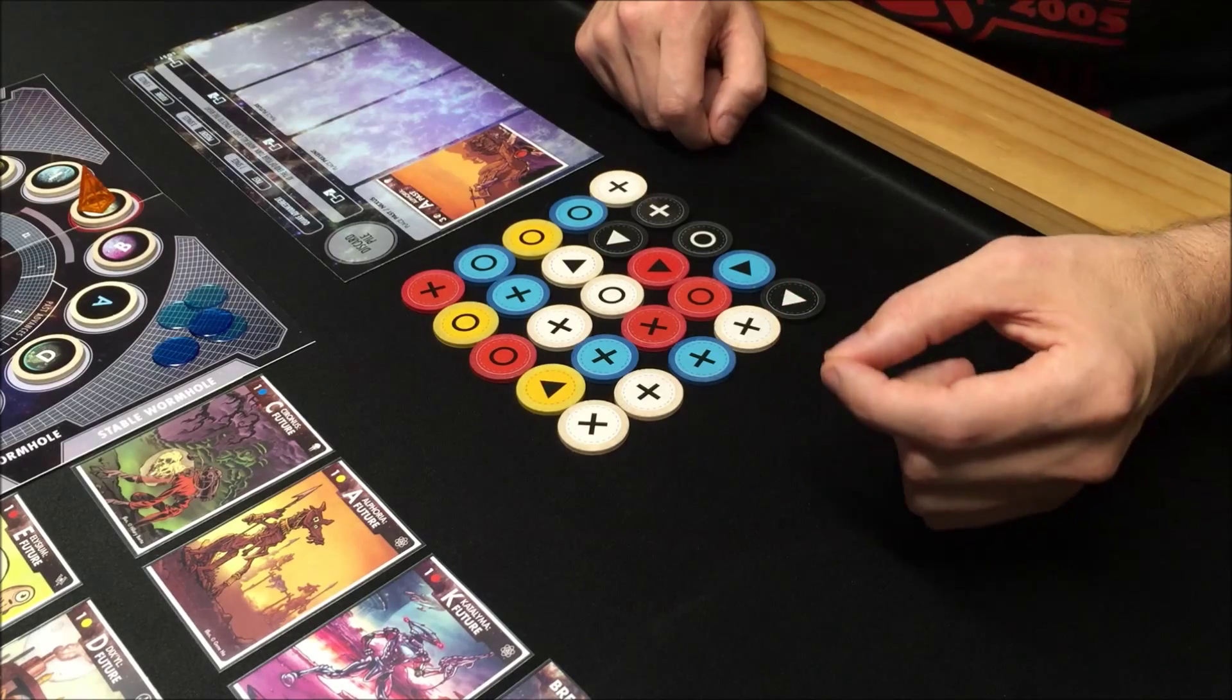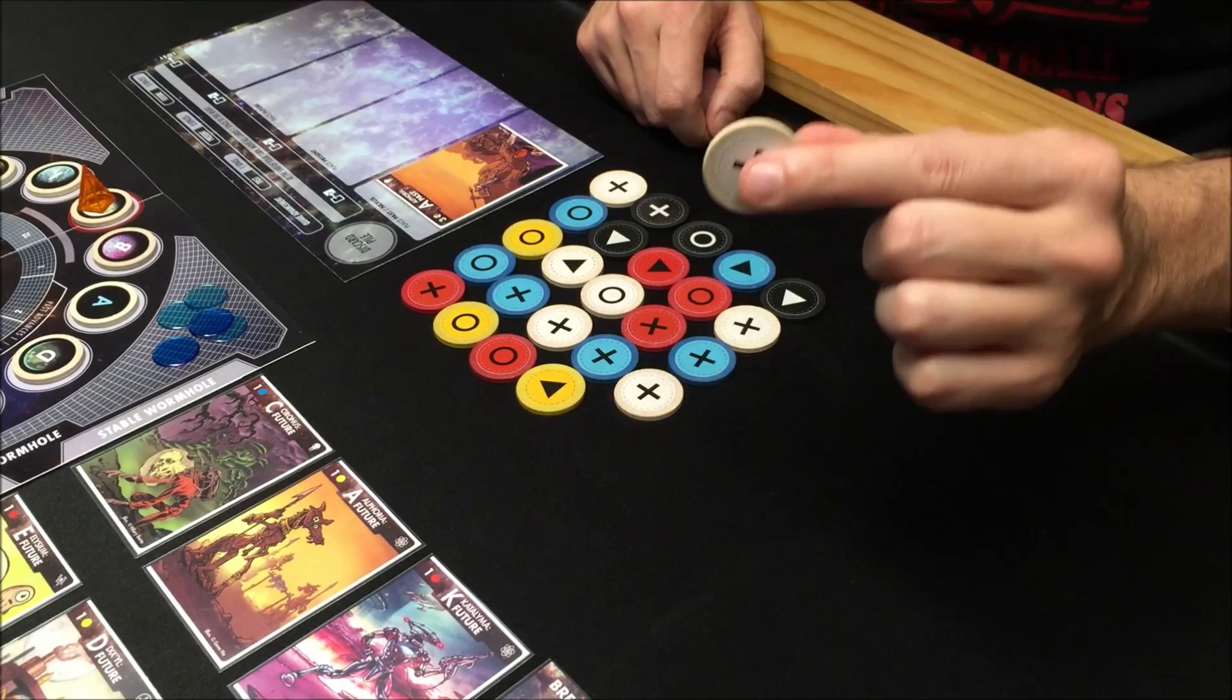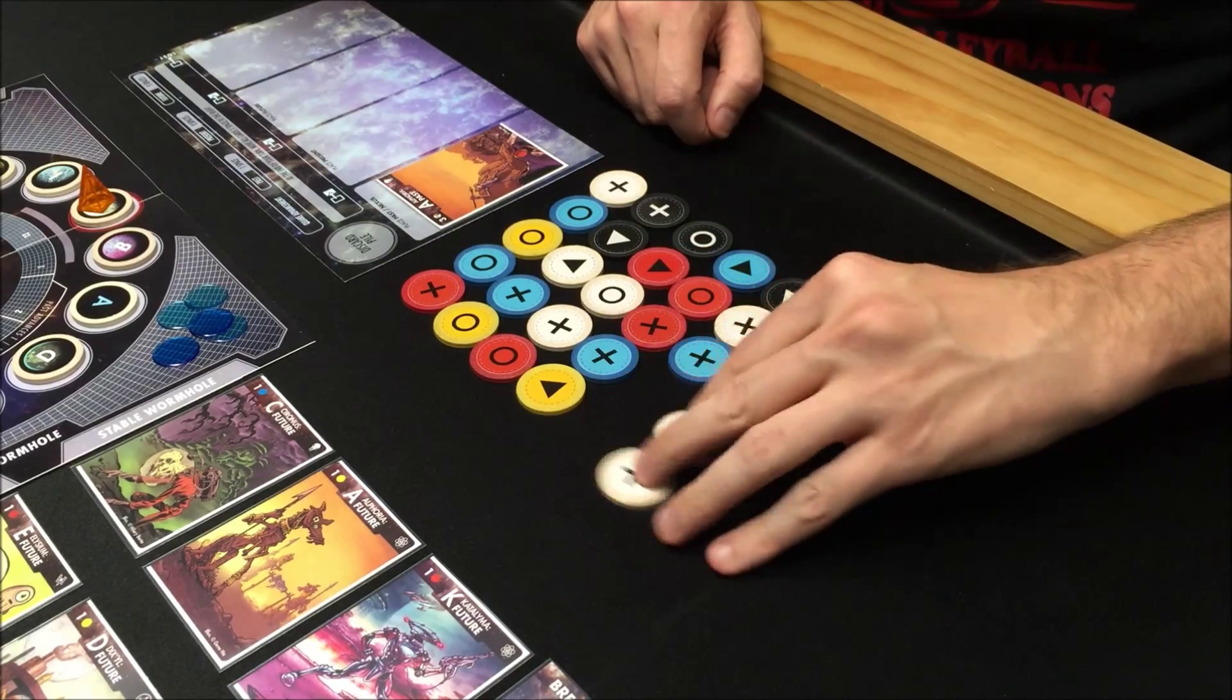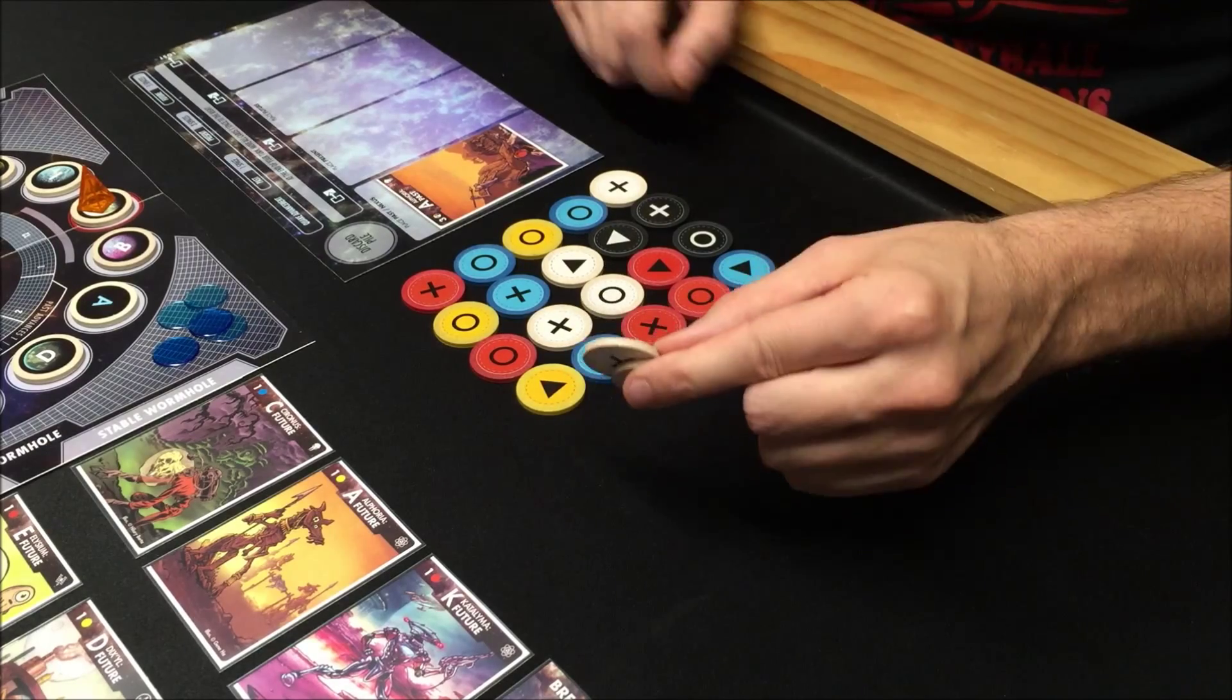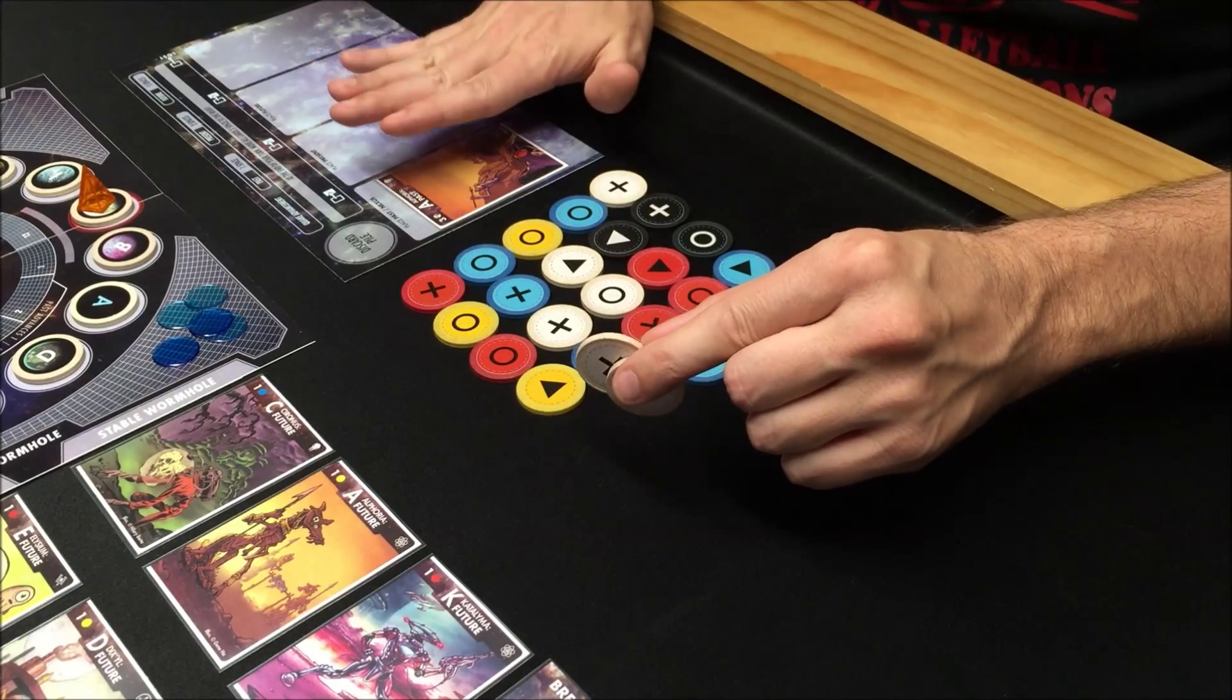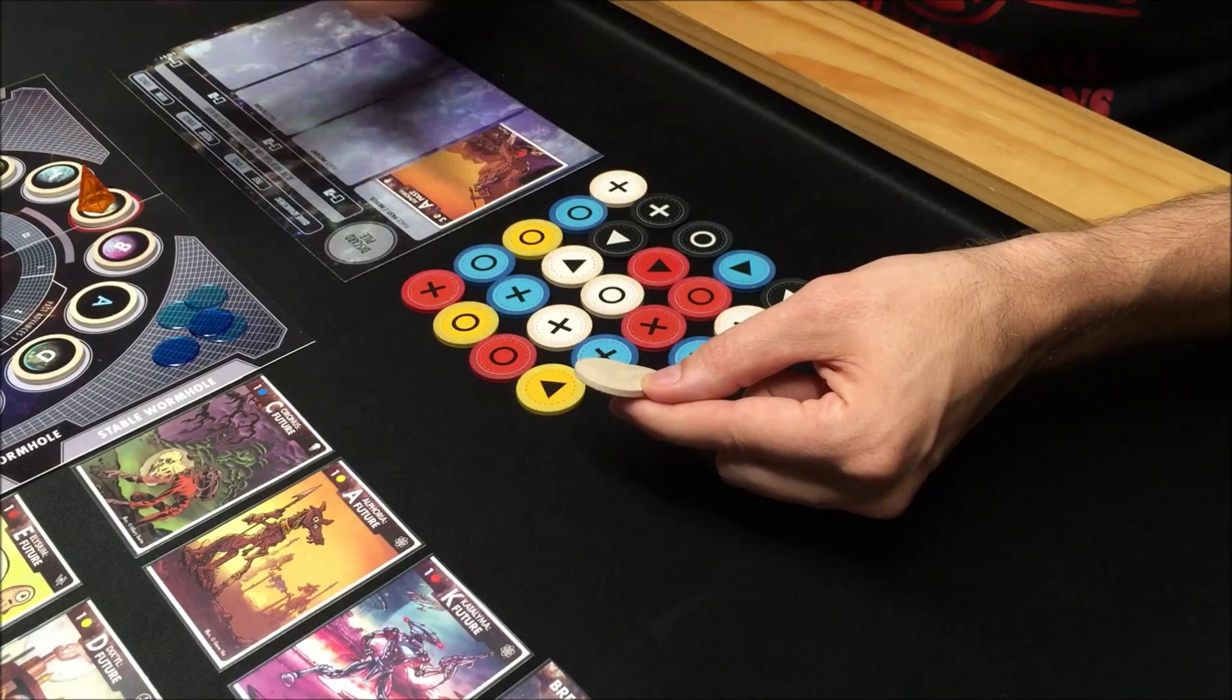You're going to earn energy discs for the size of the time strand that you made. By making a four time strand you'll earn one energy disc of that color, and if you make a five time strand you'll earn two energy discs. These may be spent on timeline cards, or in the case of black and white, can be spent in the past or to repair the universe.